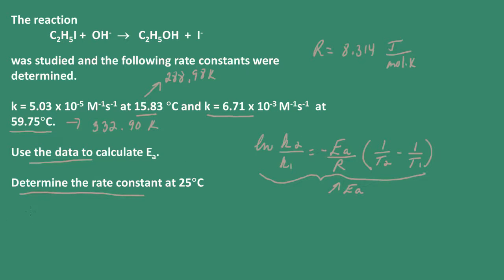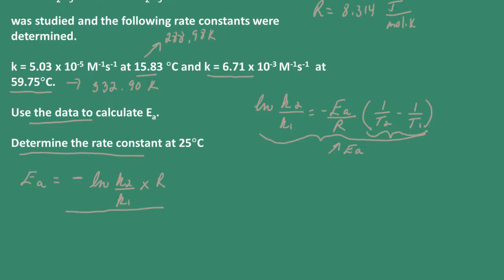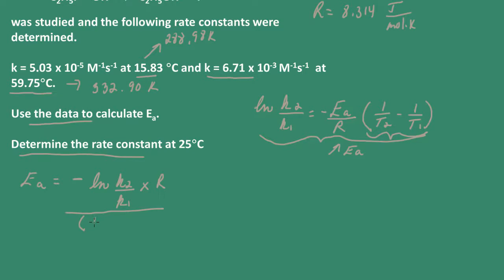That's easily done. I'll multiply both sides by negative R, so I have the natural log of K2 over K1 times the gas constant, and then divide both sides by this quantity, so that's divided by 1 over T2 minus 1 over T1. I'm going to make this K1 and this will be K2. Now I'm ready to plug in.